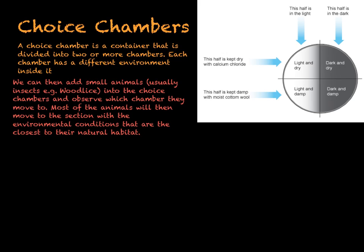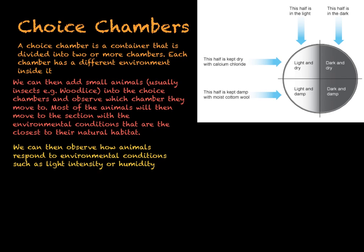An example of a choice chamber can be seen here — half is kept dry and the other half is wet; one half is dark and the other is light. By using a choice chamber we can look at how animals respond to changing environmental conditions such as light intensity and humidity. We can make these in the lab using a petri dish and cardboard to divide it into different environments. We then put a lid on top with a space in the middle so animals can move, and holes in the lid so they can breathe.